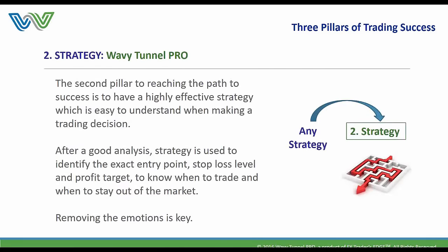The strategy we use is called the Wavy Tunnel, but this applies to any strategy — that's the second pillar. It's a highly effective strategy that is easy to understand when making a trading decision. After a good analysis, strategy is used to identify the exact entry point, stop-loss level, and profit target — to know when to trade and when to stay out. Removing emotions is key. Some traders are comfortable trading the trends; others prefer finding the end of the trend.